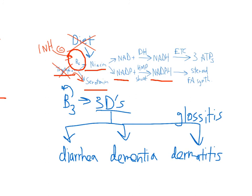If we have a deficiency, then we take the B3, flip it around, make it the 3Ds, which are diarrhea, dementia, and dermatitis, along with glossitis.